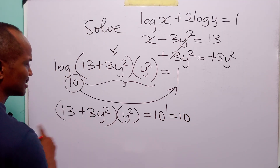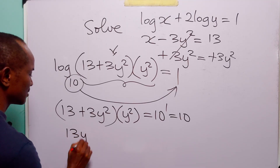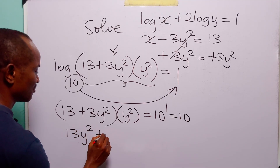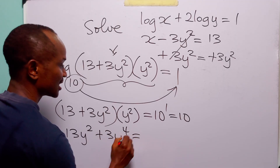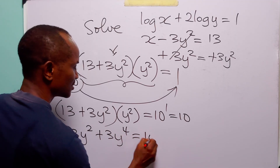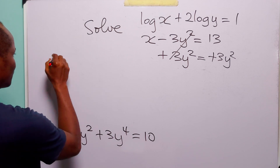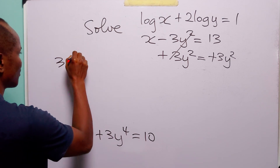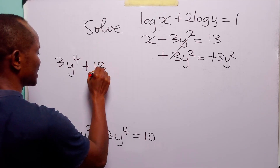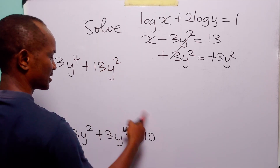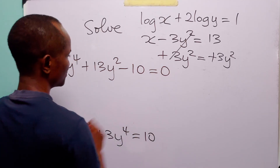When we expand this left-hand side, we have 13y squared plus 3y to the power 4 is equal to 10. And rearranging this equation, we have 3y to the power 4 plus 13y squared minus 10 is equal to 0.